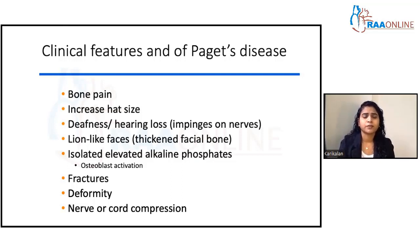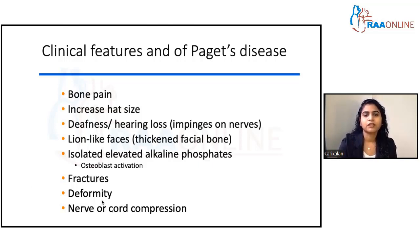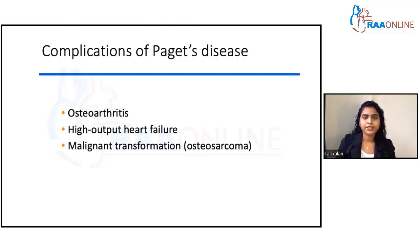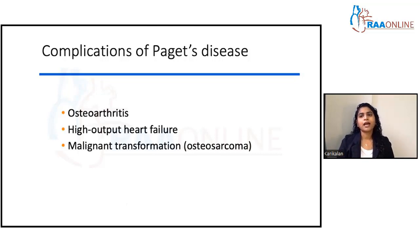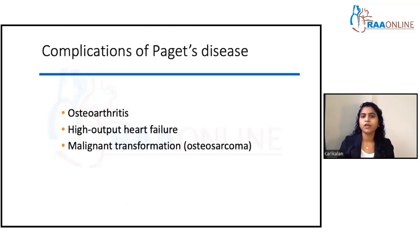Complications include multiple fractures, bone deformity, and nerve and cord compression — especially when Paget's disease affects cranial bones and the spinal canal. Osteoarthritis occurs because enlarged bones reduce joint spaces, causing friction. High output heart failure can also occur — similar to anemia — because the metabolically active bone demands a large blood supply, forcing the heart to work harder.